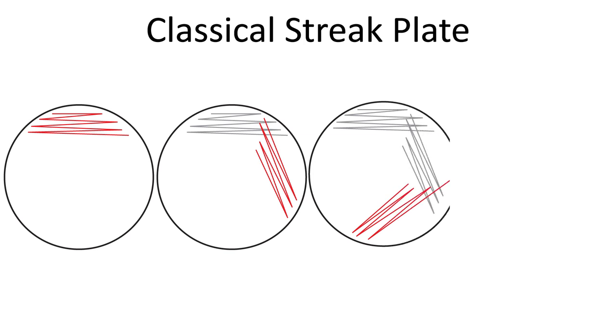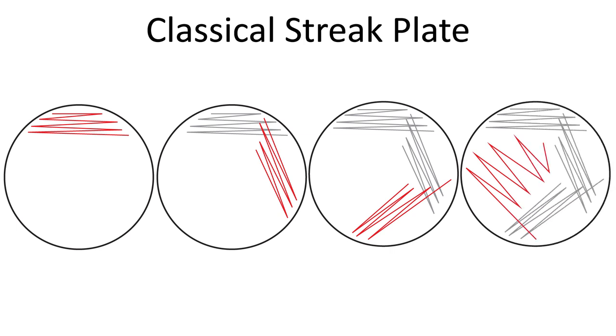Flame your loop and repeat this a third time but this time crossing the second streak and then a fourth time crossing the last streak. And every time you do this you're basically picking up a small amount of yeast and moving it over and putting it on to the next section of the plate.